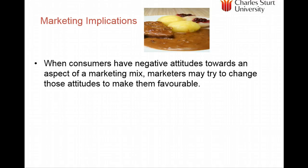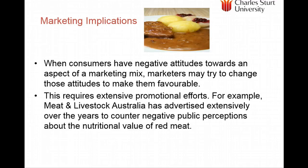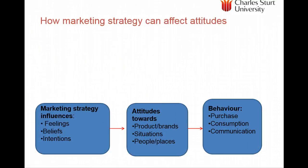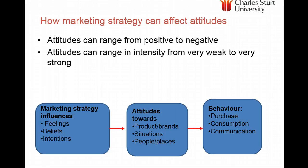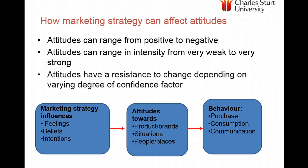When consumers have negative attitudes towards an aspect of the marketing mix — price, availability, or warranties — marketers have to change those attitudes to make them favourable. For example, the meat and livestock industry has advertised extensively to counter negative perceptions about the nutritional value of red meat. Attitudes can be positive and negative, ranging from very weak to very strong — and it's often easier to change indifferent or weak attitudes than very strong ones. Attitudes resist change depending on confidence and how important they are to people's self-identity. Marketing strategy influences feelings, beliefs, and intentions, which influence attitude towards products, brands, and situations, ultimately influencing attitude towards behaviour.